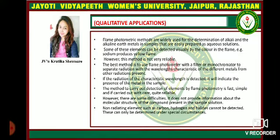Talking about the qualitative applications: the flame photometric methods are widely used for the determination of alkali and alkaline earth metals in samples that are easily prepared as aqueous solutions. Some of these elements can be detected visually by the color in the flame — for example, sodium produces a yellow flame. However, this method is not very reliable.